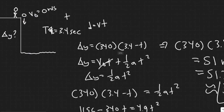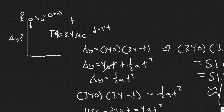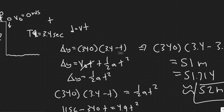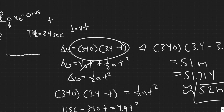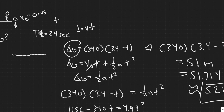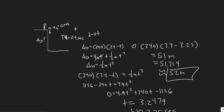The height of the cliff is 52 meters. The key strategy here is to set both delta y expressions equal to each other to solve for time t, then plug t back in to find the actual height. As long as you remember to set the delta y's equal and solve for your variable, this type of problem becomes manageable.